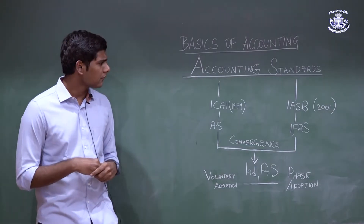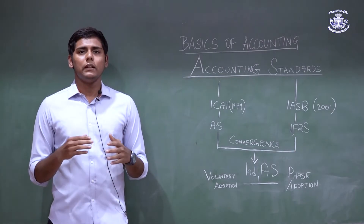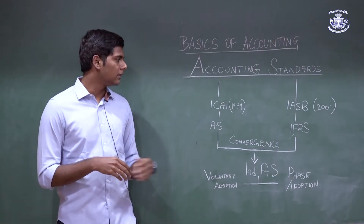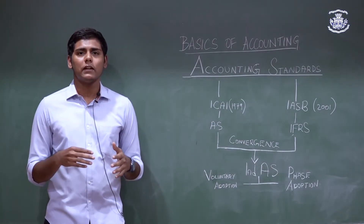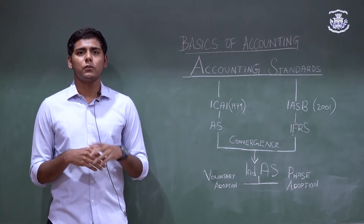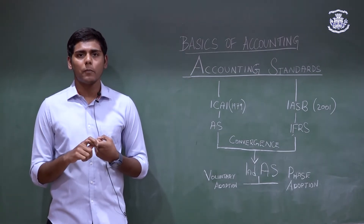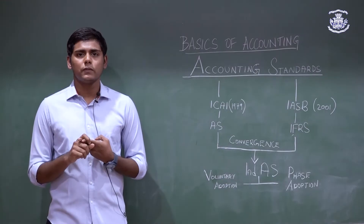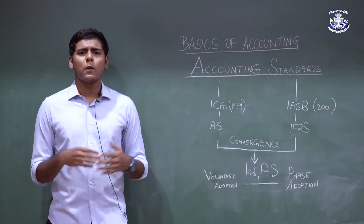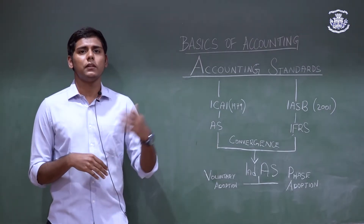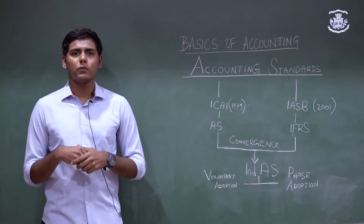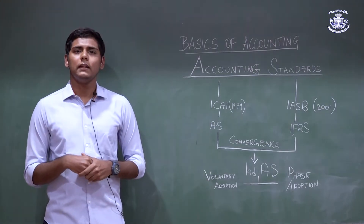To solve this, an independent body called the IASB was formed in 2001 in the UK. The IASB decided that a global accounting standard was needed and issued the IFRS — the International Financial Reporting Standards. Every country was given two options: to completely adopt the IFRS, or to take the route of convergence. India chose convergence, taking the newly issued IFRS and the already existing accounting standards and combining both to form the IND AS, or the Indian Accounting Standards.